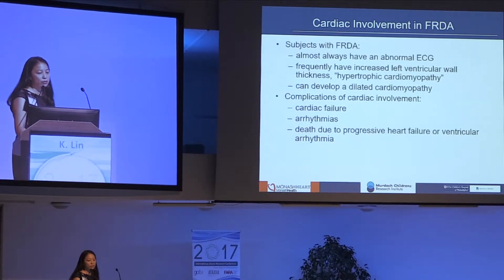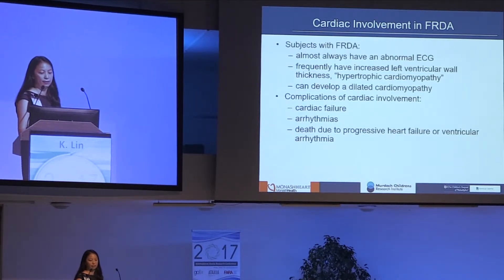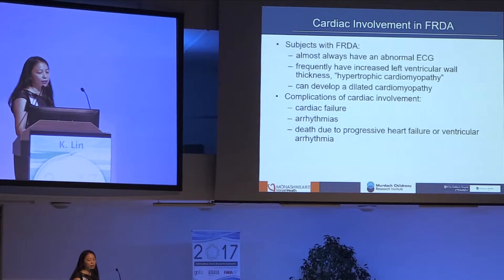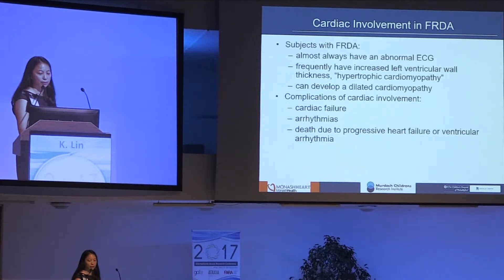Subjects with Friedreich's can also develop a dilated cardiomyopathy. In the few case reports that have tracked folks with cardiomyopathy in FA, it seems like they progress from a hypertrophic phenotype eventually to a dilated phenotype. The complications of heart involvement in FA can include heart failure, arrhythmias — primarily atrial — but we also unfortunately see premature death due to progressive heart failure or ventricular arrhythmias near the end.